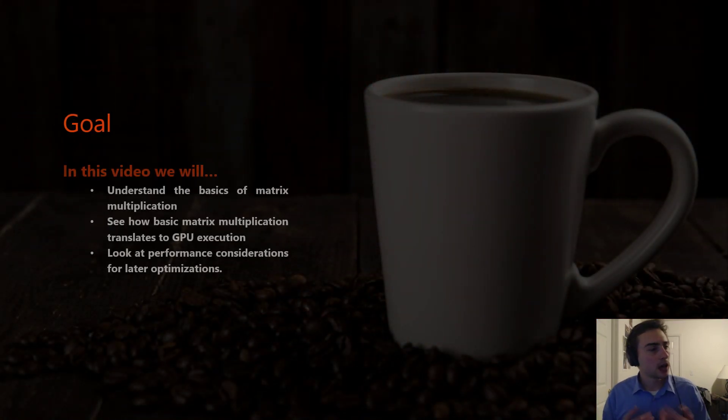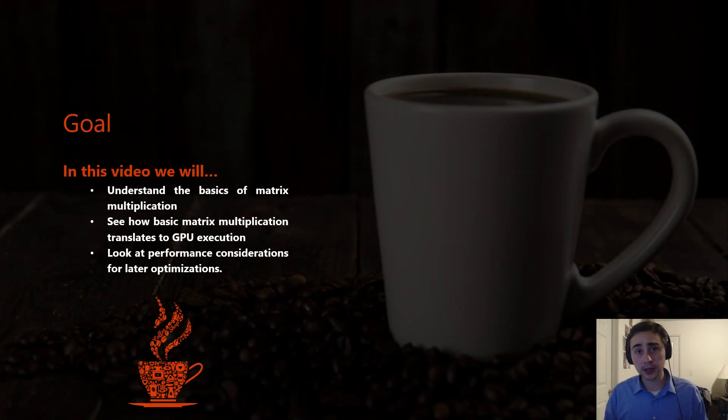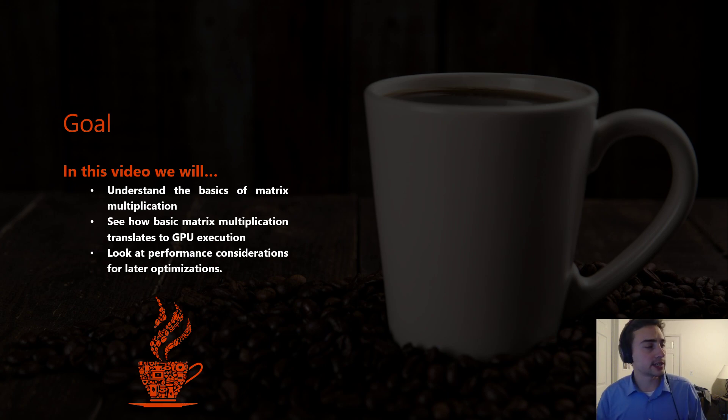So to start out, we're going to first go over matrix multiplication again, just as a quick review. Then we're going to see how we can translate this to GPU execution, and how it's going to look when we map it to CUDA code. And then we'll look at some basic performance optimizations, or some things to keep in mind before we proceed to actually going over our example code.